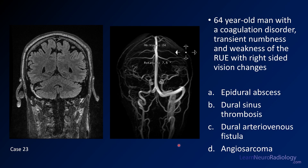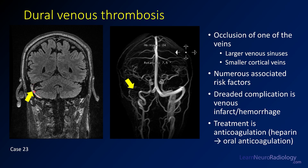Case number 23: a 64-year-old man with coagulopathy, transient numbness and weakness of the right upper extremity, and some visual changes. The left image is a coronal FLAIR; the right is a MIP from an MR venogram. Choices are epidural abscess, dural sinus thrombosis, dural AV fistula, or angiosarcoma. The answer is dural sinus thrombosis. On the coronal FLAIR, there's abnormal hyperintensity in the sigmoid sinus where you'd normally see a flow void. The venogram shows truncation of the transverse sinus, with no sigmoid or transverse sinus on that side. A complication is venous infarct or hemorrhage — think about this if you see unusually distributed hemorrhages around the posterior temporal lobes.